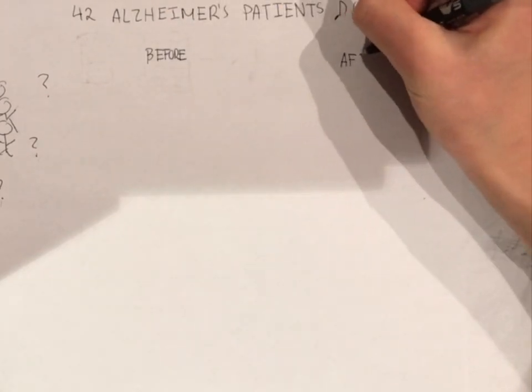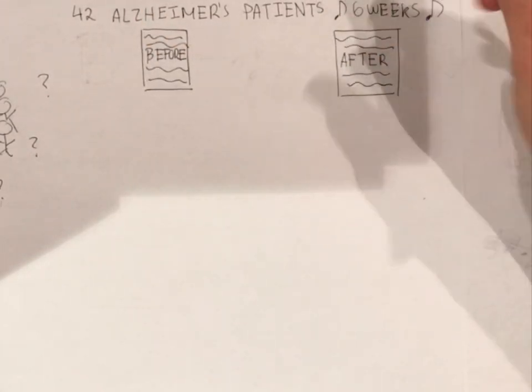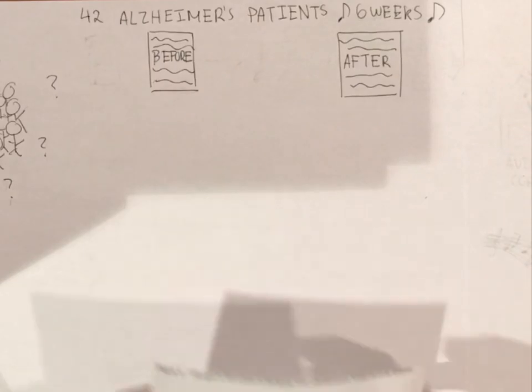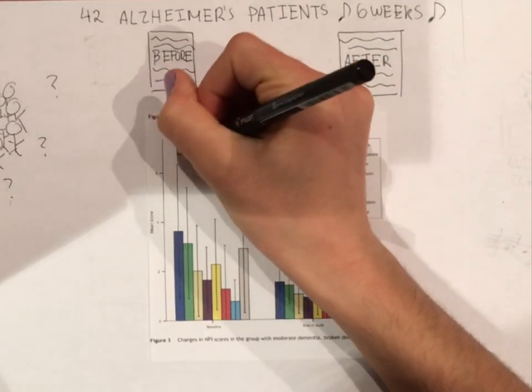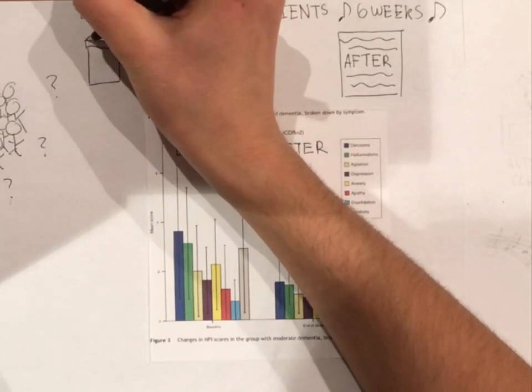These 42 patients were given standardized psychological exams before and after the classes. And what do you know? In moderate Alzheimer's cases, the patients had less delusions, hallucinations, irritability, anxiety, and depression after the classes.